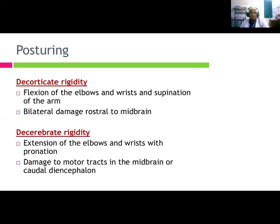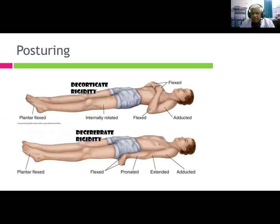Decorticate rigidity involves flexion of the elbows with pronation, resulting from damage to motor tracts in the midbrain or caudal diencephalon. This presents as flexed wrist, adduction, flexion, internal rotation, and plantar flexion. Decerebrate rigidity involves extension instead of flexion of the upper limb, with pronation and plantar flexion — indicating a more caudal brainstem lesion.